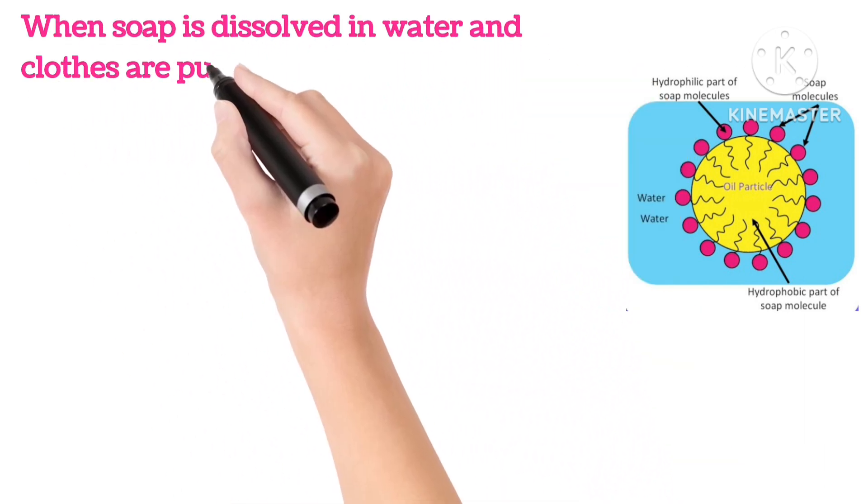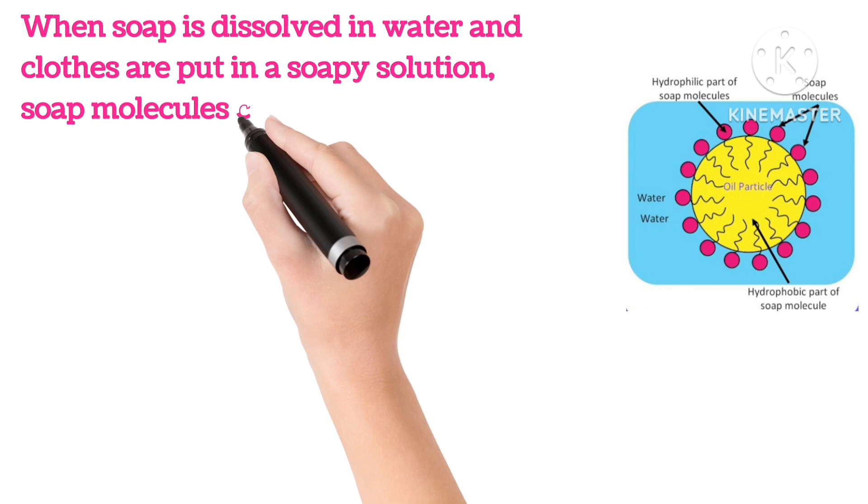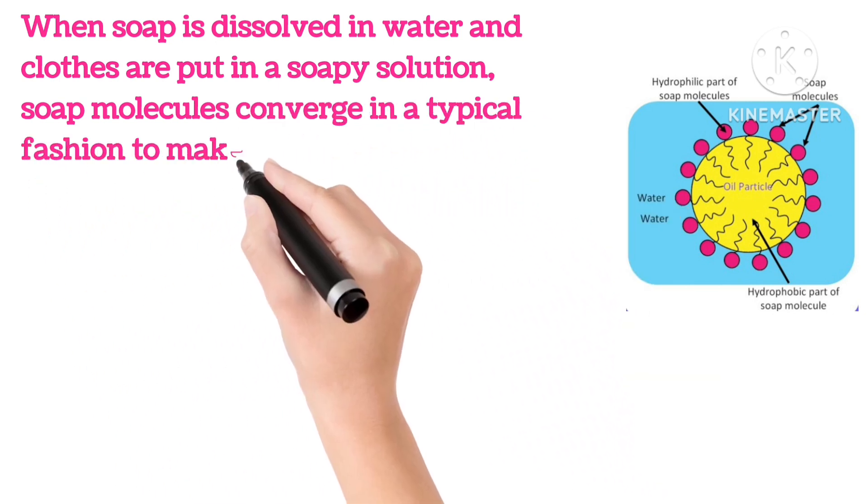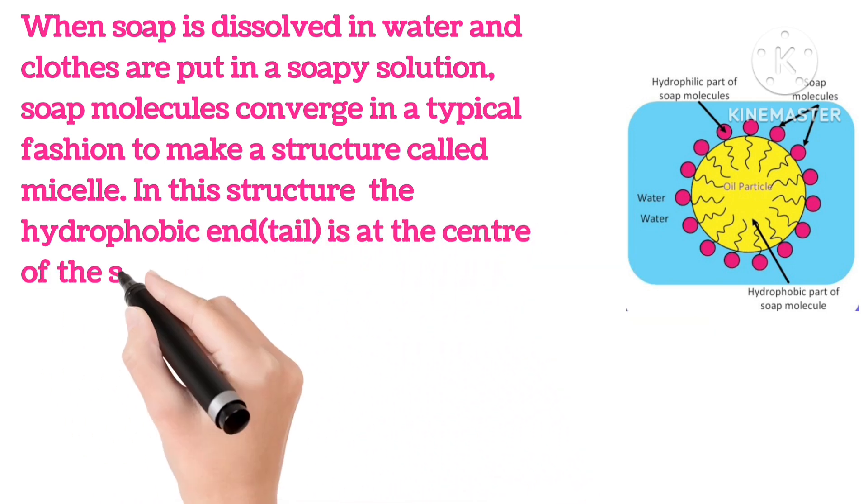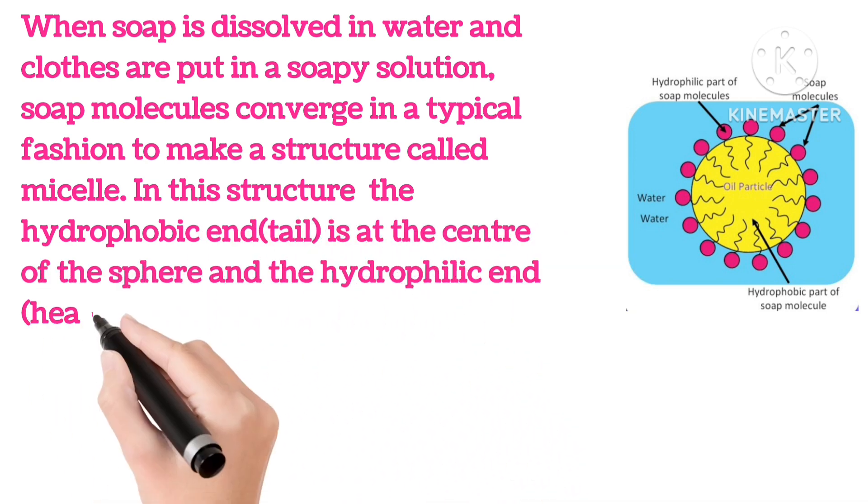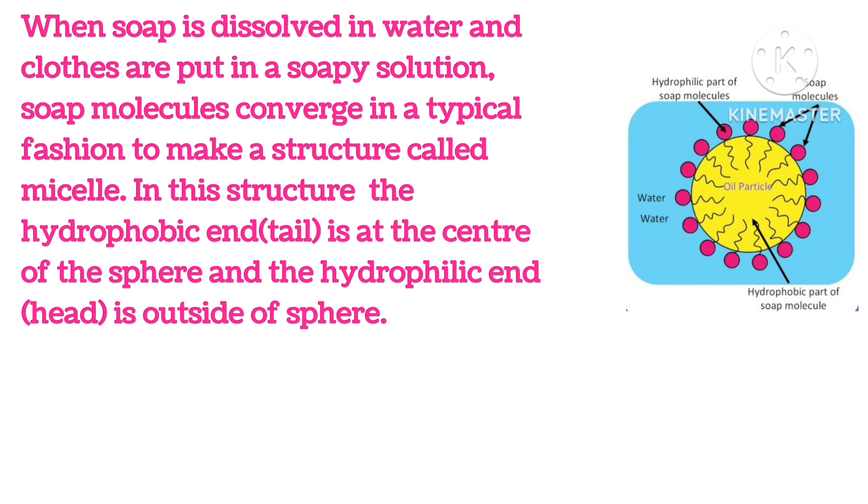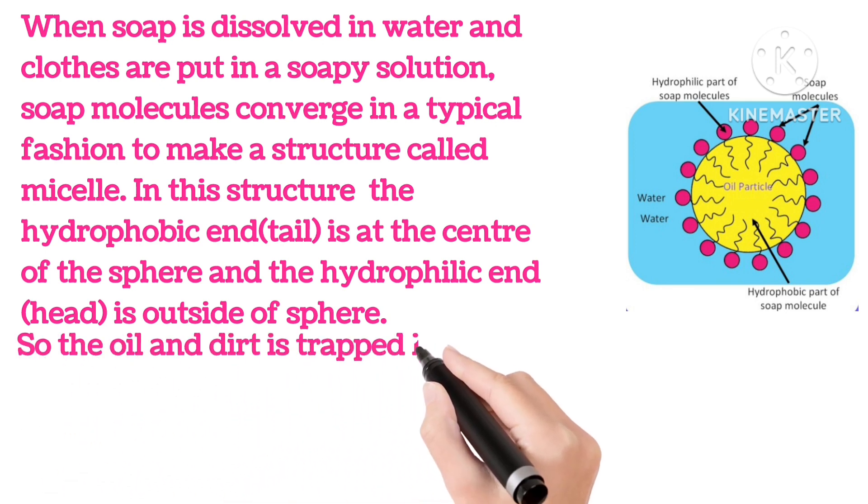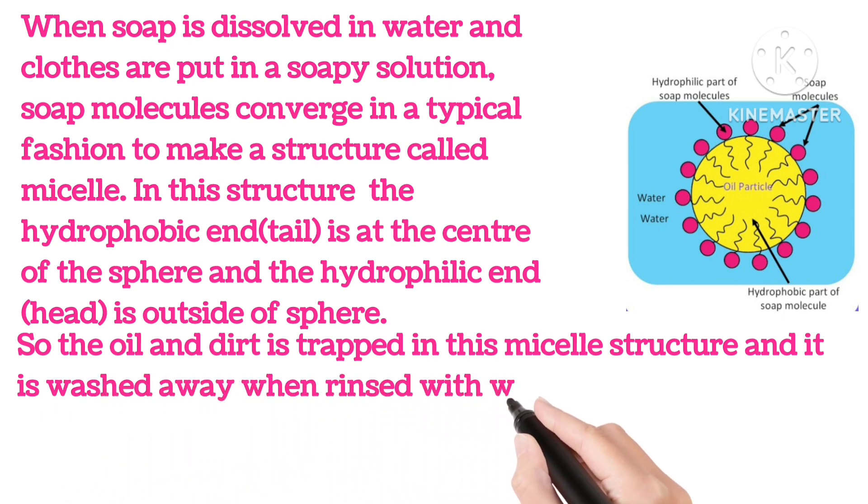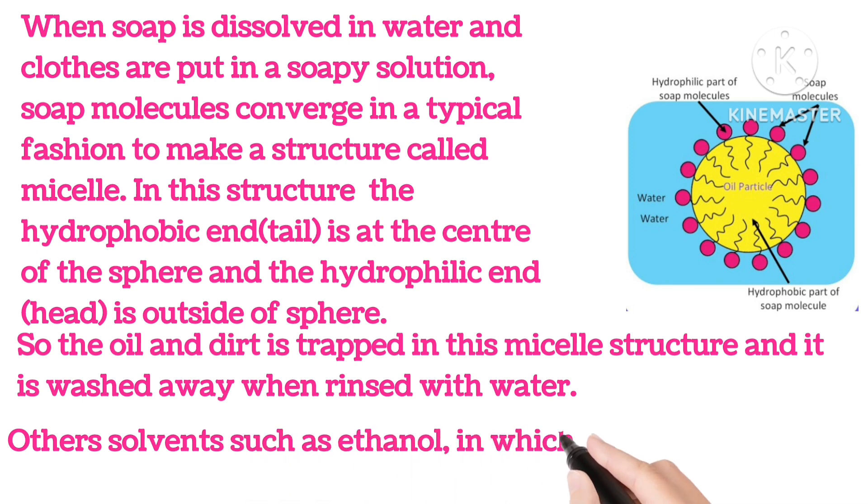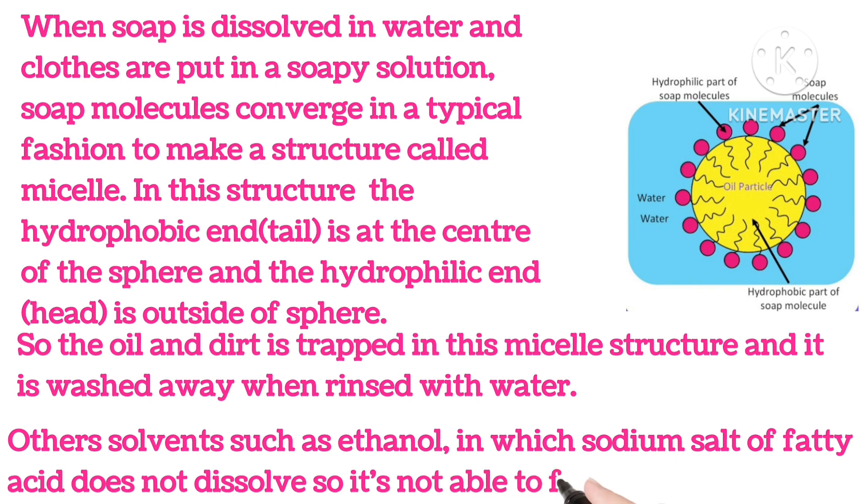When soap is dissolved in water and clothes are put in soapy solution, soap molecules converge in a typical fashion to make a structure called micelle. In this structure, the hydrophobic end, i.e. tail, is at the center of the sphere, and hydrophilic end, head, is outside of the sphere. So the oil and dirt is trapped in this micelle structure and is washed away when rinsed with water. Other solvents such as ethanol in which sodium salts of fatty acid do not dissolve, so it is not able to form such micelles.